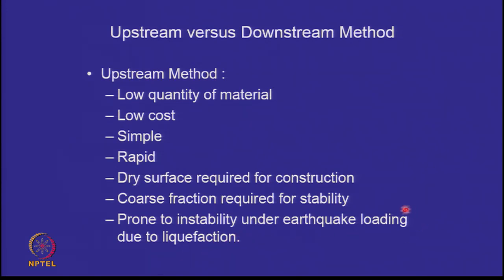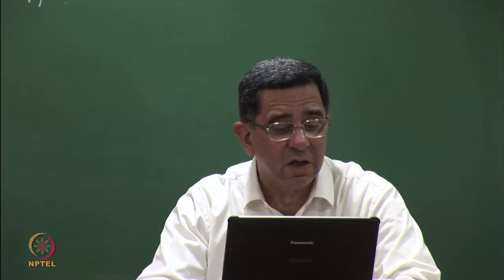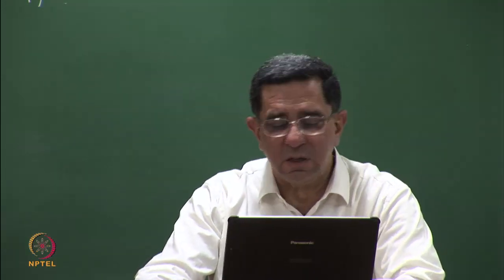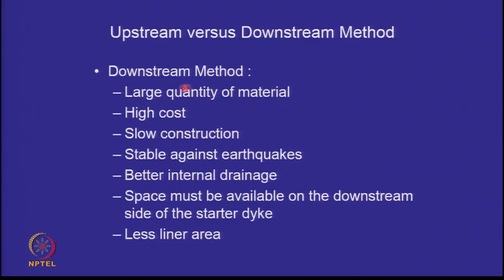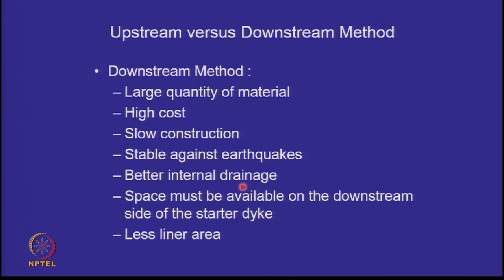All loose, hydraulically deposited tailings or ash are prone to instability under earthquake due to the possibility of liquefaction. The grain size distribution of the material lies in the range of liquefiable materials, and we cannot always assure that lateral sorting has taken place. So if you are in a highly seismic-prone area, watch out for this problem. The downstream method requires a larger quantity of material, has higher cost, and is slower to construct, but it can be done while the pond is still operational since you are constructing on the downstream side. It is stable against earthquakes, nothing rests on loose deposit, and it has better internal drainage.